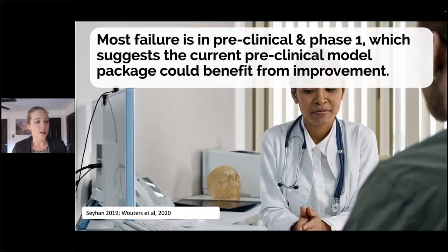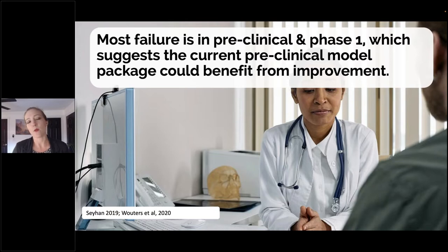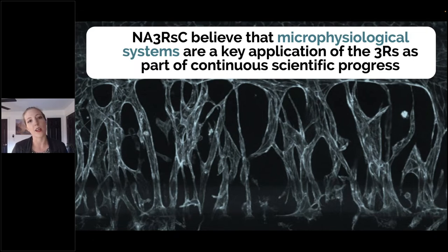All of this failure really suggests that we could benefit from improvement in our preclinical models. This is not to say that animal research is not important or necessary in today's current structure, but it could be better. This is what science is all about — moving forward, figuring out what's a better model, what's a better process, refining. Microphysiological systems is what we think is a key application of the three R's and a true commitment to continuous scientific progress.